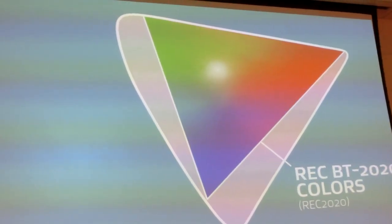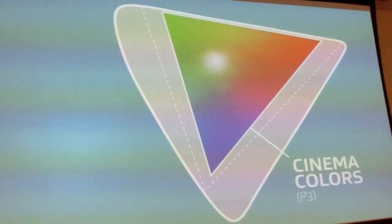This is the famous horseshoe diagram, you may know, CIE 1936. These are all the colors we can see.